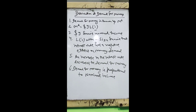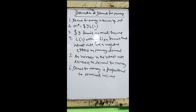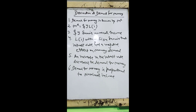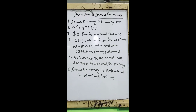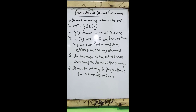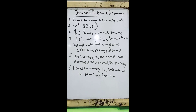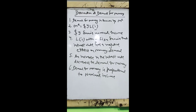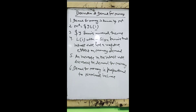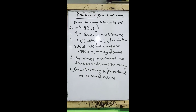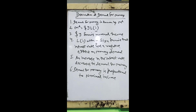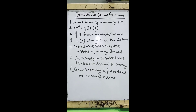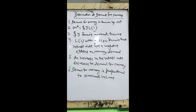Dollar Y is nominal income. An increase in the interest rate decreases the demand for money. Money demand is proportional to nominal income. In the function MD = dollar Y · L(i), if the interest rate is fixed, then money demand will increase proportionally with nominal income. So MD and nominal income are directly and proportionally related — if your nominal income doubles, your money demand also doubles.